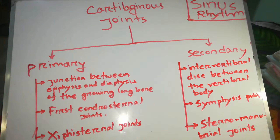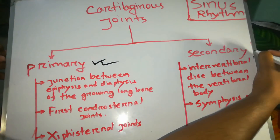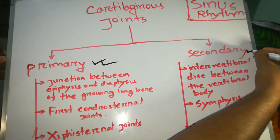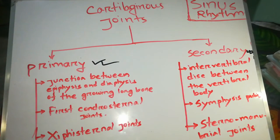Let's start. Cartilage and joint. Cartilage and joint is two types: primary cartilage and joint, and secondary cartilage and joint.